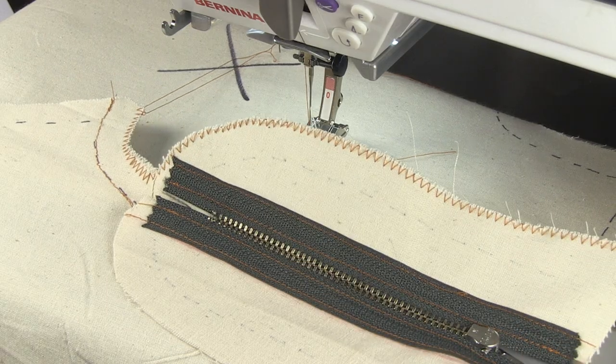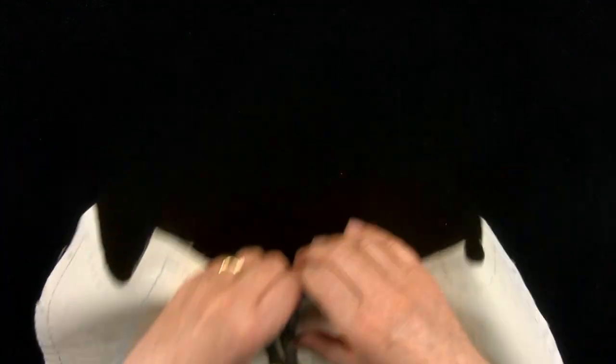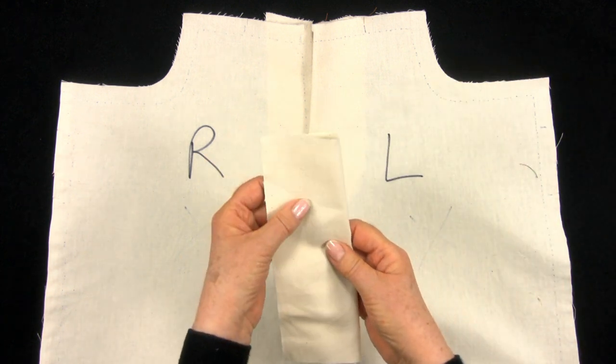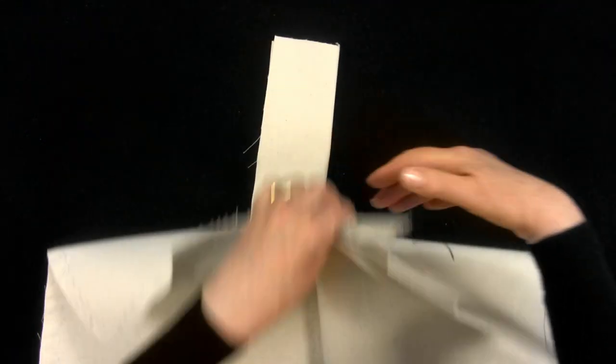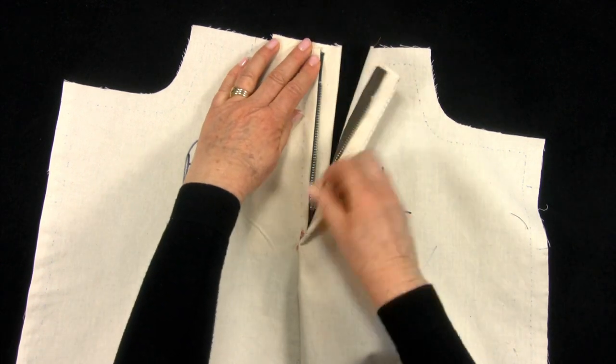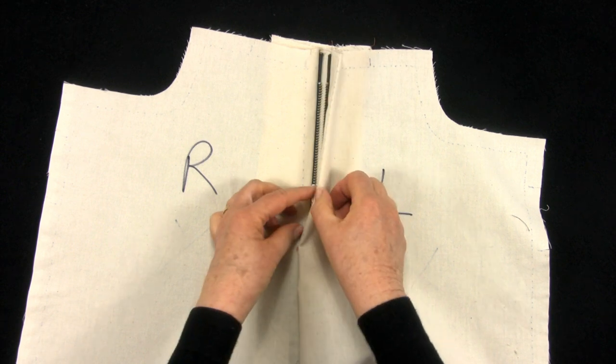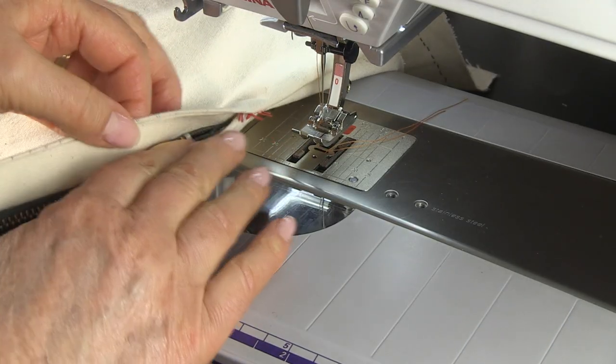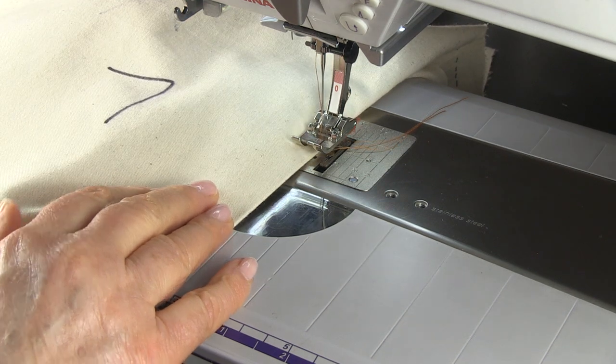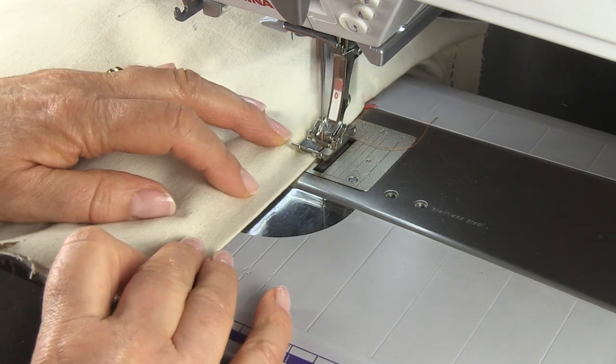This is how it looks so far from the wrong side. The zip guard will be placed centrally behind the zip, along the center front fold on the left front. I can do this with the zip closed and everything pushed out of the way. You don't have to start the stitching at the bottom of the opening. It will connect with stitching at a later stage.